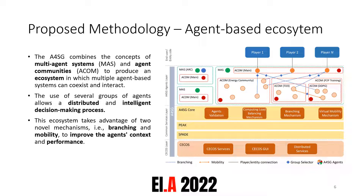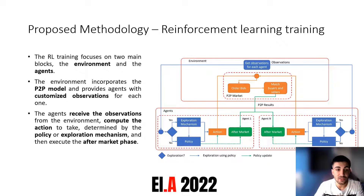Branching allows the main agents — representing a player, service provider, or smart building — to replicate themselves into agents with more specific objectives, such as having a forecast service, participating in an energy community, or having a reinforcement learning model for peer-to-peer. Mobility allows agents to move between agent-based systems to improve their context. This mobility differs from conventional approaches because it stems from an evaluation by the agents themselves: if an agent performs well in a group it stays there; if not, it searches for other possibilities to improve its performance.